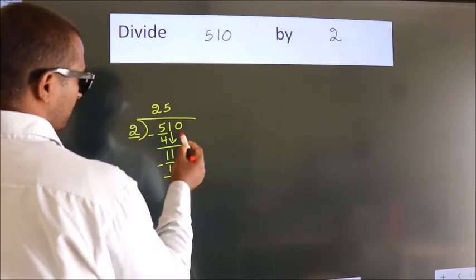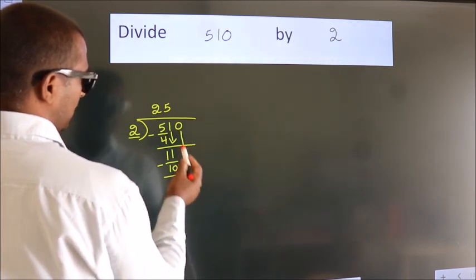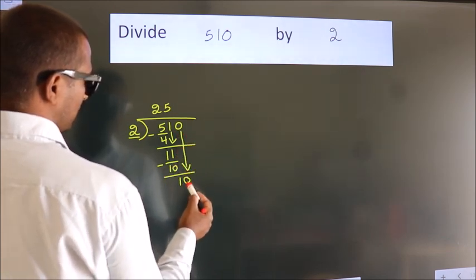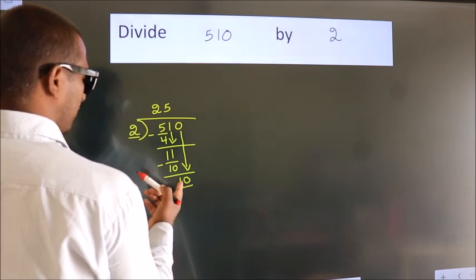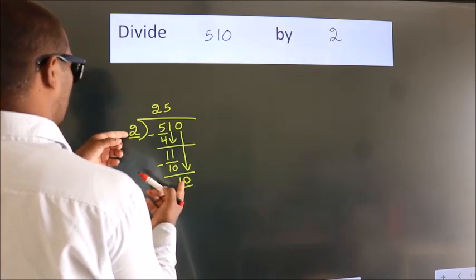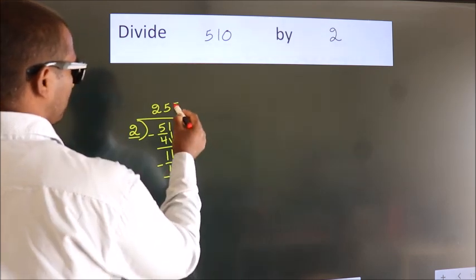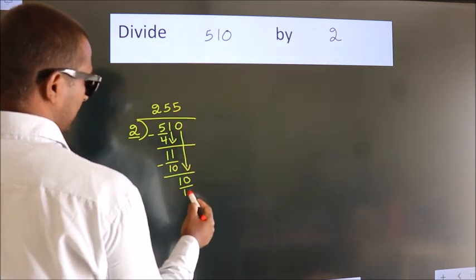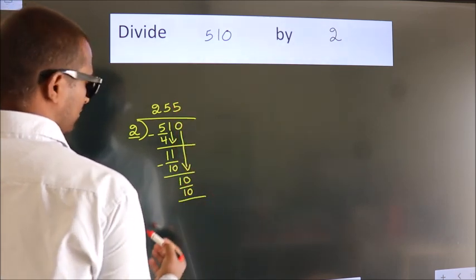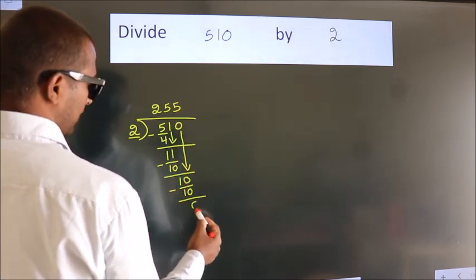After this, bring down the beside number. So 0 down. So 10. When do we get 10? In the 2 table, 2 times 5 is 10. Now we subtract. We get 0.